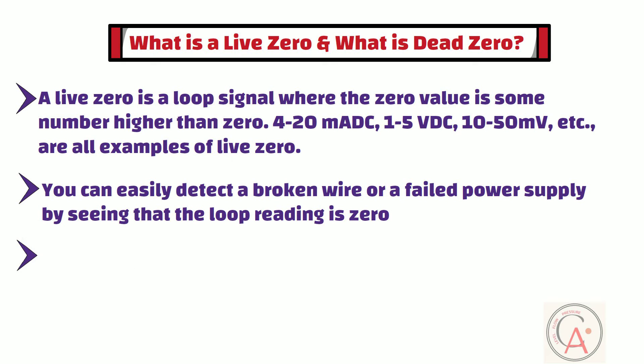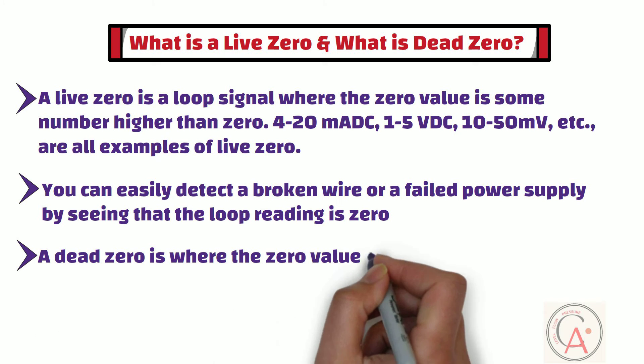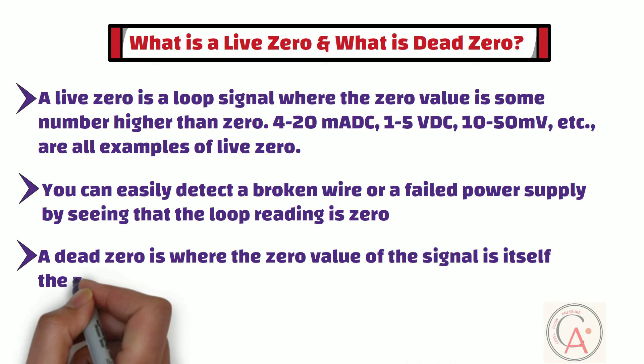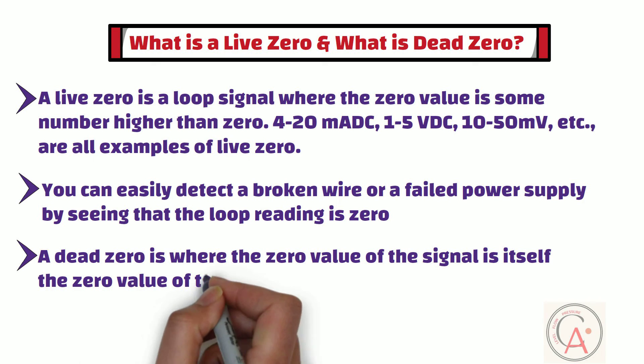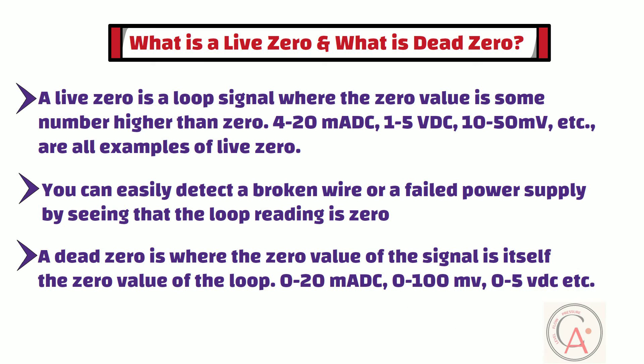On the other side, a dead zero is where the zero value of the signal is itself the zero value of the loop. 0-20mA DC, 0-100mV, and 0-5V DC are all examples of dead zero. In this type of signal, we cannot distinguish between a connection break signal and a zero signal — in both cases, the value will be zero.